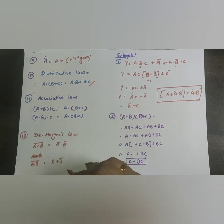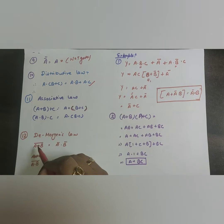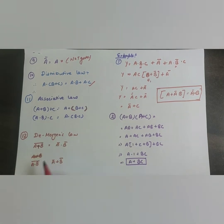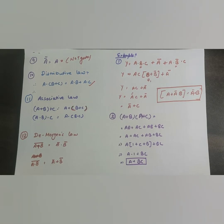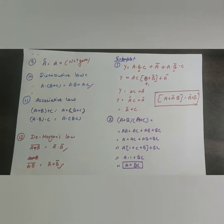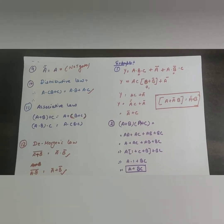De Morgan's law, which I have explained in a previous lecture: (A+B)̄ = Ā·B̄, and (A·B)̄ = Ā+B̄. You can check my previous lectures for a detailed explanation.